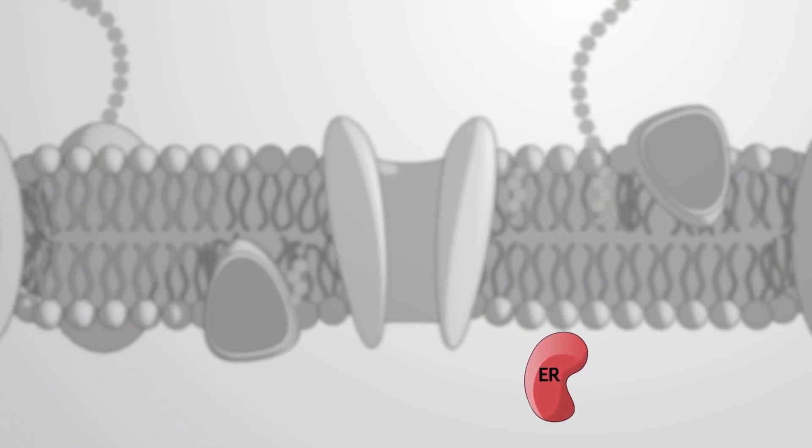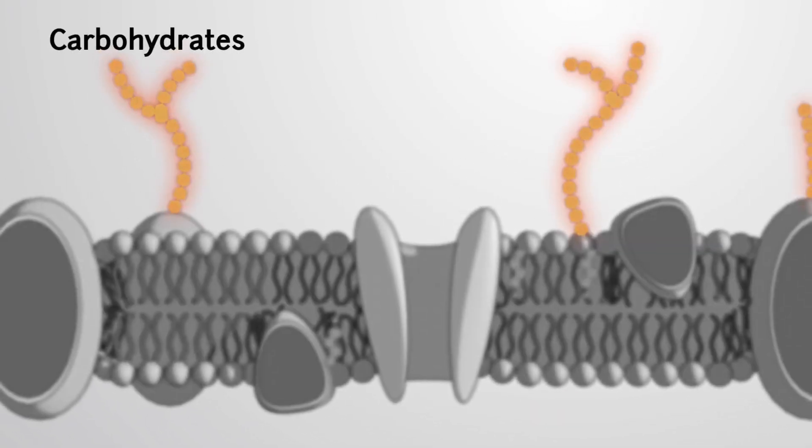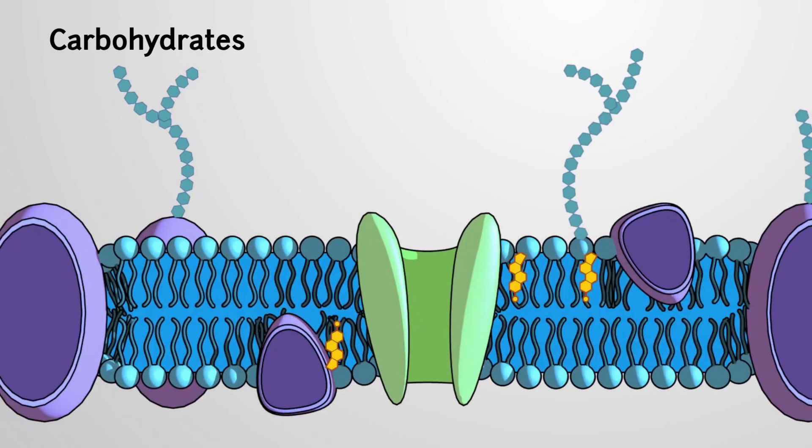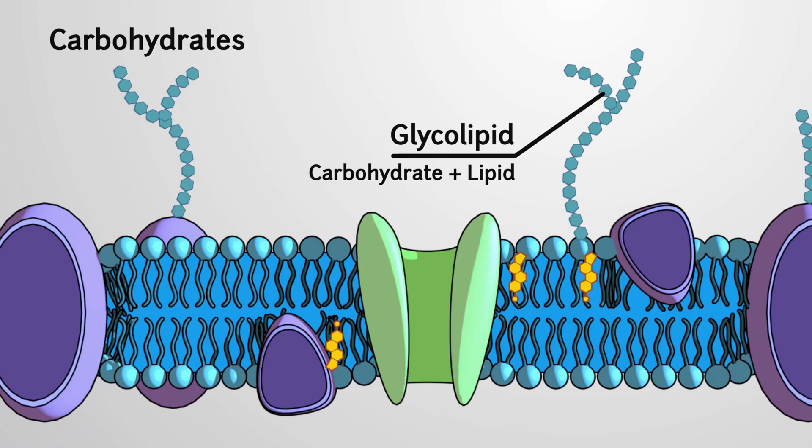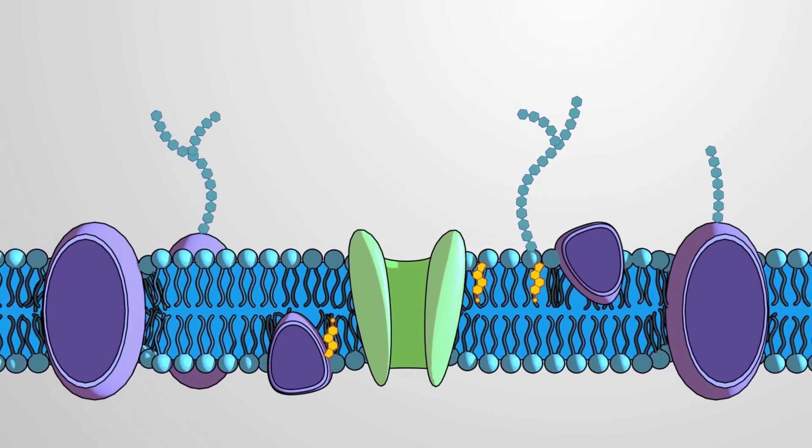as is the case with estrogen receptors. Also on the outer periphery is the last component, carbohydrates. They can bind to proteins and form glycoproteins, or to phospholipids and form glycolipids. Once bound, these carbohydrate complexes are referred to as the glycocalyx, the sugar coating.